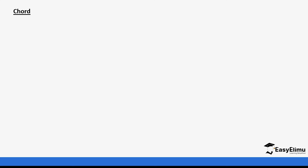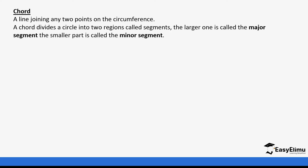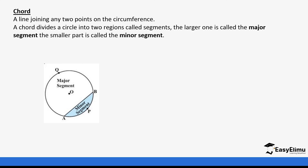A chord is a line joining any two points on the circumference, and a chord divides a circle into two regions. These regions are referred to as segments. A chord running across the circle forms a major and a minor segment. We have chord AB in this case, and AB forms two segments — the major segment which is white and the minor segment which is blue. Go back and check how to calculate the area of these segments in the previous video.